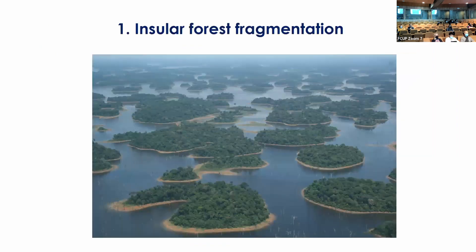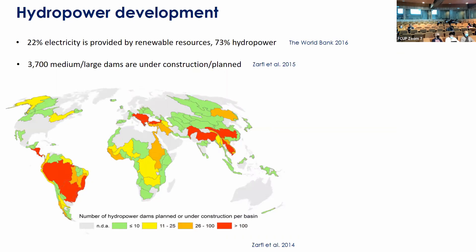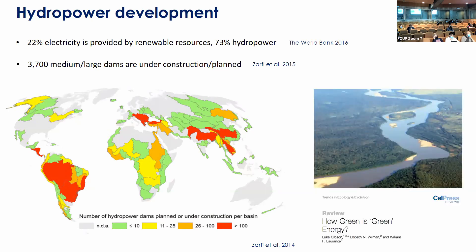Insular forest fragmentation is mostly caused by hydropower development. When a dam is constructed, lowland areas become flooded and hilltops become insular patches. Hydropower is the most common source of renewable energy today, with more than 3,000 mid-to-large-size dams planned or under construction, most in tropical landscapes. In tropical areas, topography is relatively flat, so reservoirs tend to be proportionally too large with shallow water and land-rich islands, and the energy produced is limited because there's no steep slope.